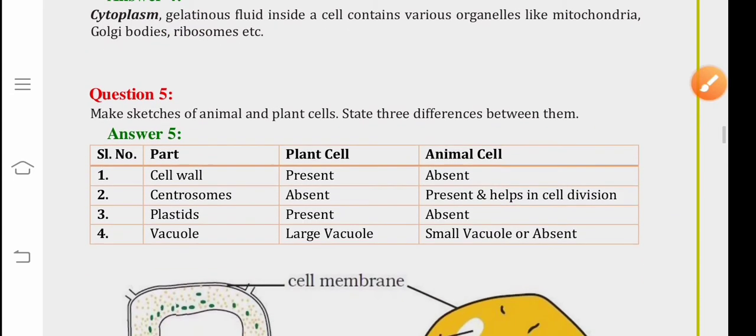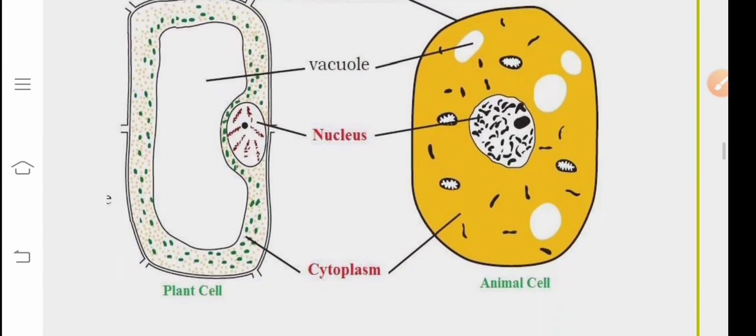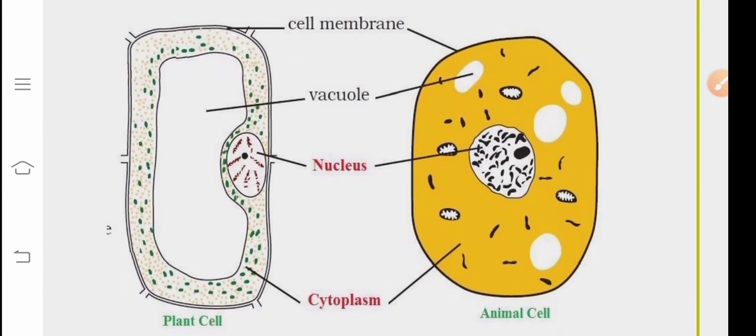Question number five is, make sketches of animal and plant cells and state three differences between them. These are the sketches of plant and animal cells. On the left hand, there is plant cell and on the right hand side, there is animal cell. They consist of cell membrane, cytoplasm, nucleus and vacuoles.